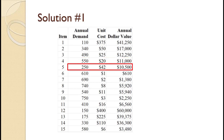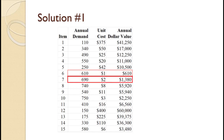For item number five, annual demand of 250 times unit cost of $42 equals $10,500. For item number six, annual demand of 610 times unit cost of $1 equals $610. For item number seven, annual demand of 690 times unit cost of $2 equals $1,380.